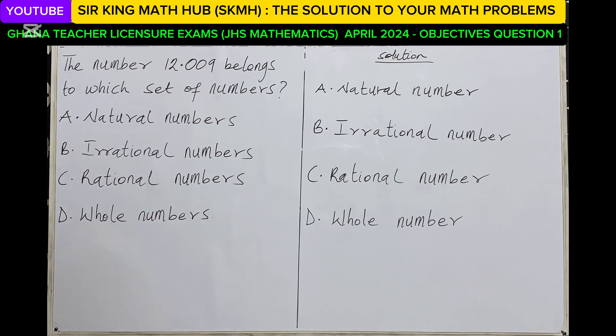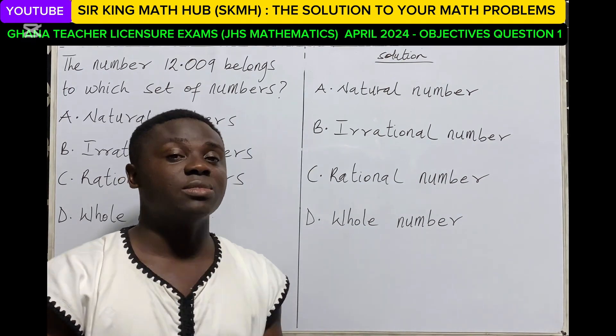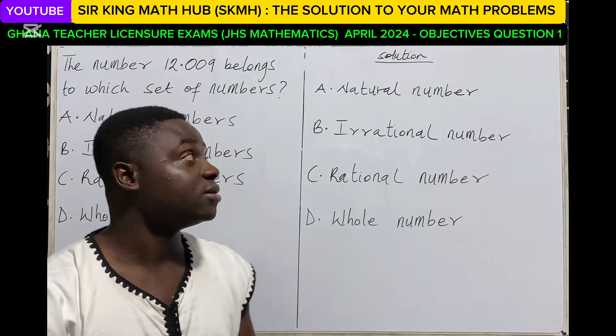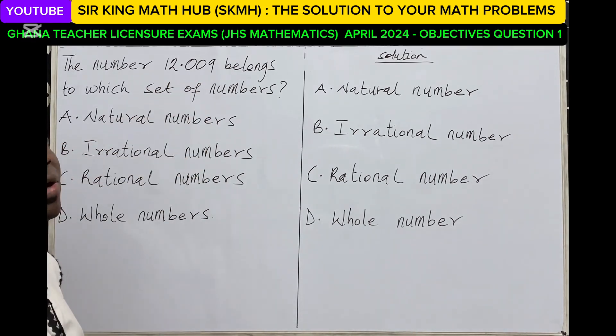So now recall that when we talk about natural numbers, they're also known as counting numbers. Then we know that counting numbers start from one up to infinity. So for natural numbers, there is no way we can get to 12.009. We don't have decimals in natural numbers.